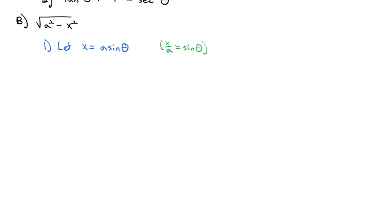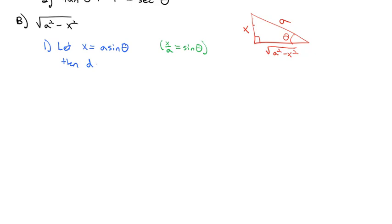When we do that, dividing both sides by a gives x over a equals sine of theta, so we can build a right triangle. Sine is opposite over hypotenuse, so the opposite is x and the hypotenuse is a. The Pythagorean theorem tells us the other side is the square root of a squared minus x squared. And dx equals a cosine theta d theta.